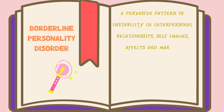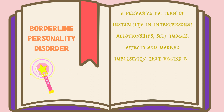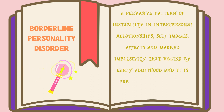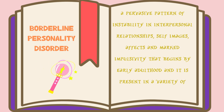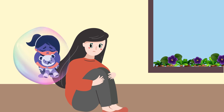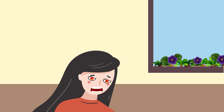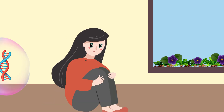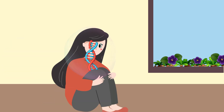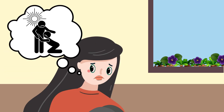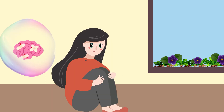The DSM-5 describes BPD as a pervasive pattern of instability in interpersonal relationships, self-image, affect, and marked impulsivity that begins by early adulthood, and is present in a variety of contexts. Many researchers believe that BPD results from a combination of factors such as childhood abuse and trauma, genetic factors, and problems with brain chemicals.